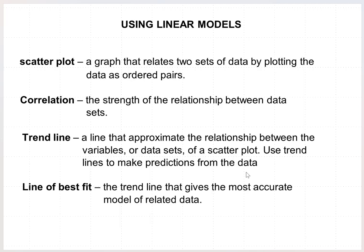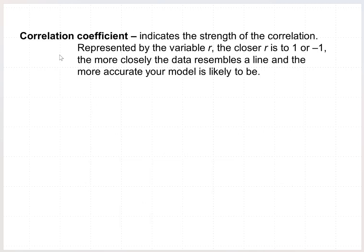We can use trend lines to make predictions about the data. And then the line of best fit, that's the trend line that gives the most accurate model of the related data. And then finally the correlation coefficient indicates the strength of the correlation represented by the variable r. And the closer r is to either 1 or negative 1, the more closely the data resembles a line and the more accurate your model is likely to be.